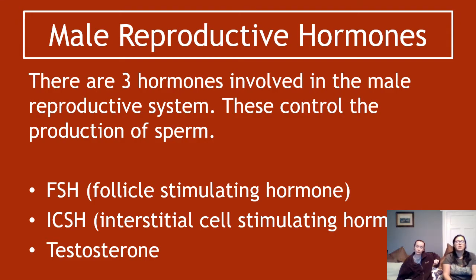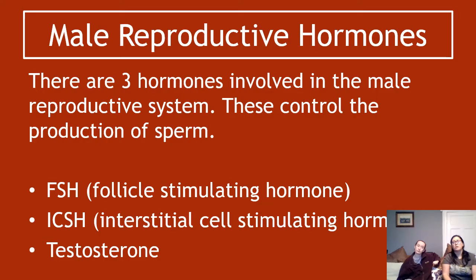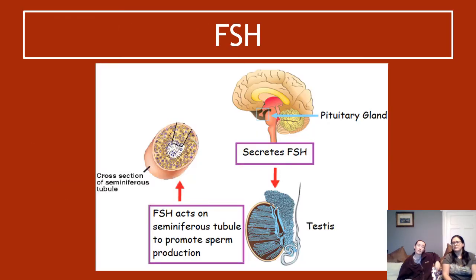There are three hormones involved in the male reproductive system. The first is FSH, which stands for follicle stimulating hormone, but the letters are enough. There's a broad rule: if a hormone's name is a bunch of letters, it's made by the pituitary gland. So FSH and ICSH — interstitial cell stimulating hormone — are both made in the pituitary gland. Testosterone, being a proper name, is not made in the pituitary gland.